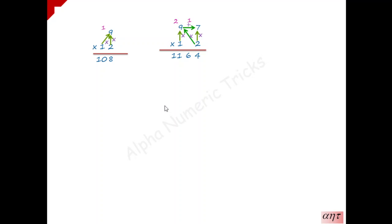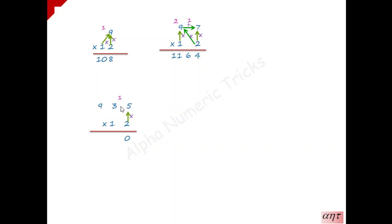Now we will see one more problem so you can become familiar with this trick: 935 multiplied by 12. First, multiply 2 into 5 — 2 into 5 is 10, 0 is written, 1 is carry forward. Write the carry forward number in between the two numbers to avoid confusion — whenever you have a carry forward number, write it between the two corresponding numbers.